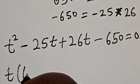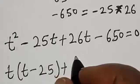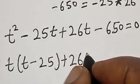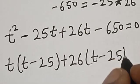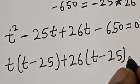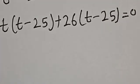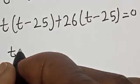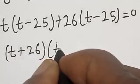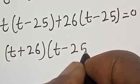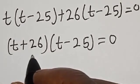Factoring, we get t times (t minus 25) plus 26 times (t minus 25) equals 0, which gives (t plus 26)(t minus 25) is equal to 0.